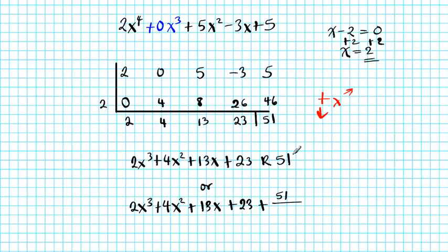2x³ + 4x² + 13x + 23 plus the remainder 51 divided by what you're dividing by, which is x - 2. Alright, so don't forget you always have to write the powers in decreasing order going from the biggest to the smallest. And any power that's missing has to be filled in with the placeholder with 0 as its coefficient.